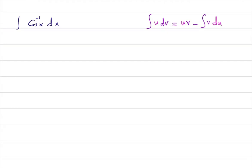But what is a good choice for u and dv here? Let us take u to be inverse cosine of x and dv be nothing but dx.